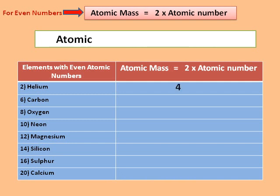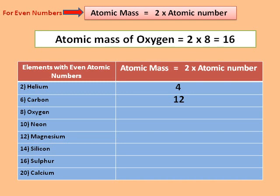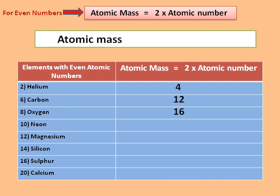Atomic mass of carbon is equal to 2 × 6 = 12. Atomic mass of oxygen is equal to 2 × 8 = 16. Atomic mass of neon is equal to 2 × 10 = 20.